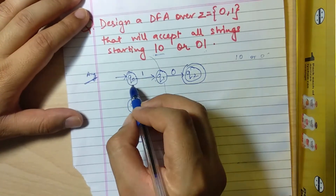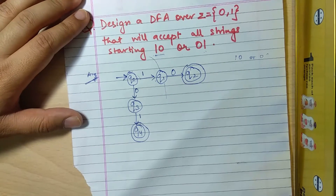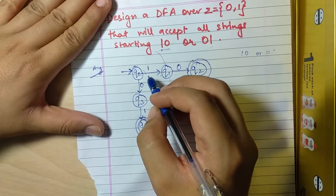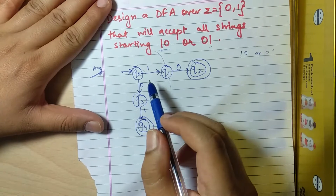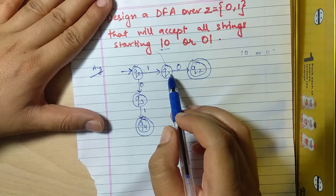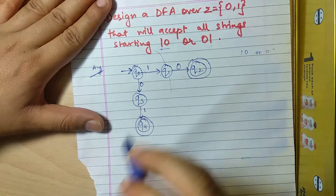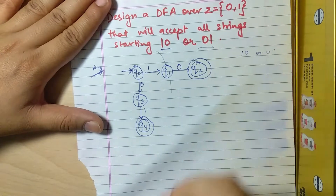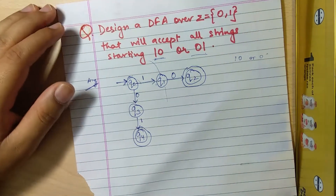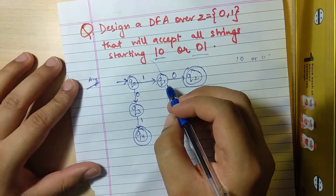First we'll draw the initial state, which is denoted by an arrow symbol and a circle — we usually name it q0. The transition of q0: if it encounters '1', it goes to q1, and if it encounters '0', it goes to q3. This is done to satisfy the shorter strings '10' and '01'.